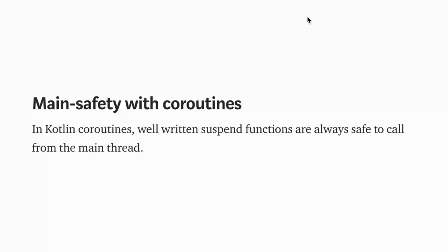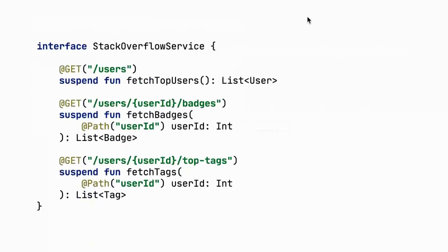This is not something required but it can really simplify our code. For example, if we use Retrofit, we can define suspending functions that return values and they are already main-safe. In this example used throughout the presentation, there's a Retrofit service using the Stack Overflow API with three methods: one to fetch all users, one to fetch the badges of a user, and one to fetch the tags of a user.